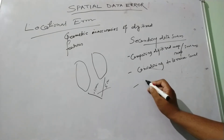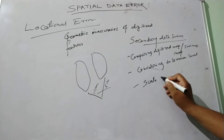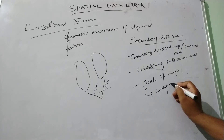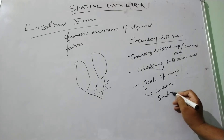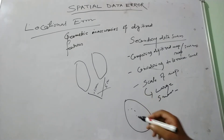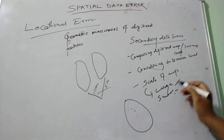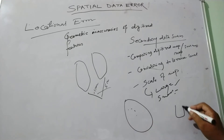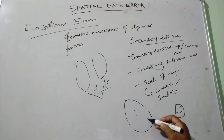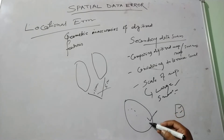Another important factor is the scale of the map. We know the large scale and small scale concept. In small scale, we can view large areas but in smaller detail. So during scanning or collecting data, if we are acquiring information from a small-scale map, we can lose a lot of information. So this is one of the locational errors.